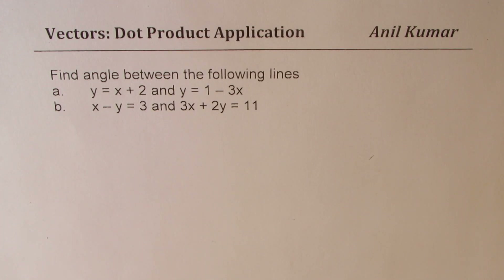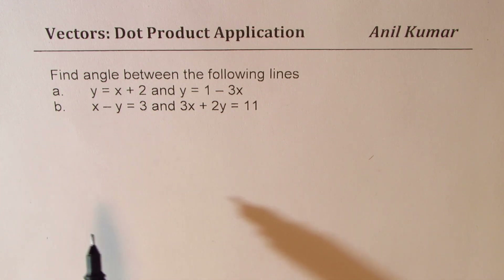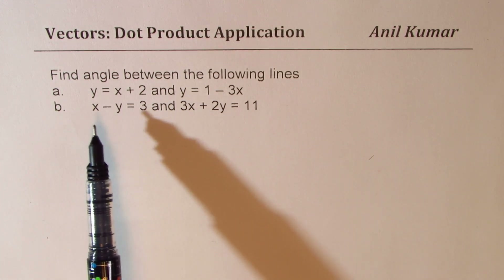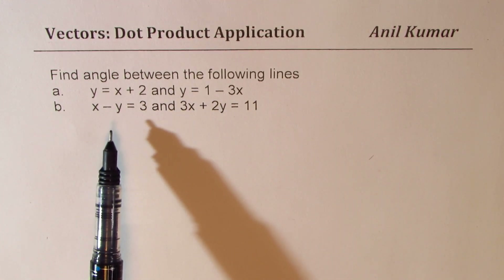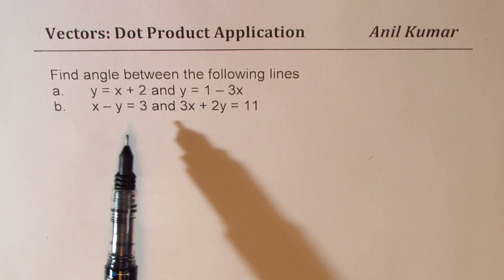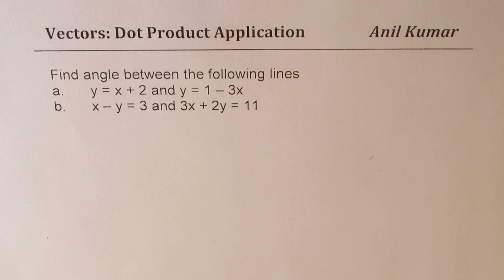I'm Anil Kumar sharing with you a very important application of dot product. We'll find the angle between following lines. We have two examples here. One set is y equals to x plus 2 and y equals to 1 minus 3x. The other system of lines includes x minus y equals to 3 and 3x plus 2y equals to 11. You can always pause the video, answer the question, and then look into my suggestions.